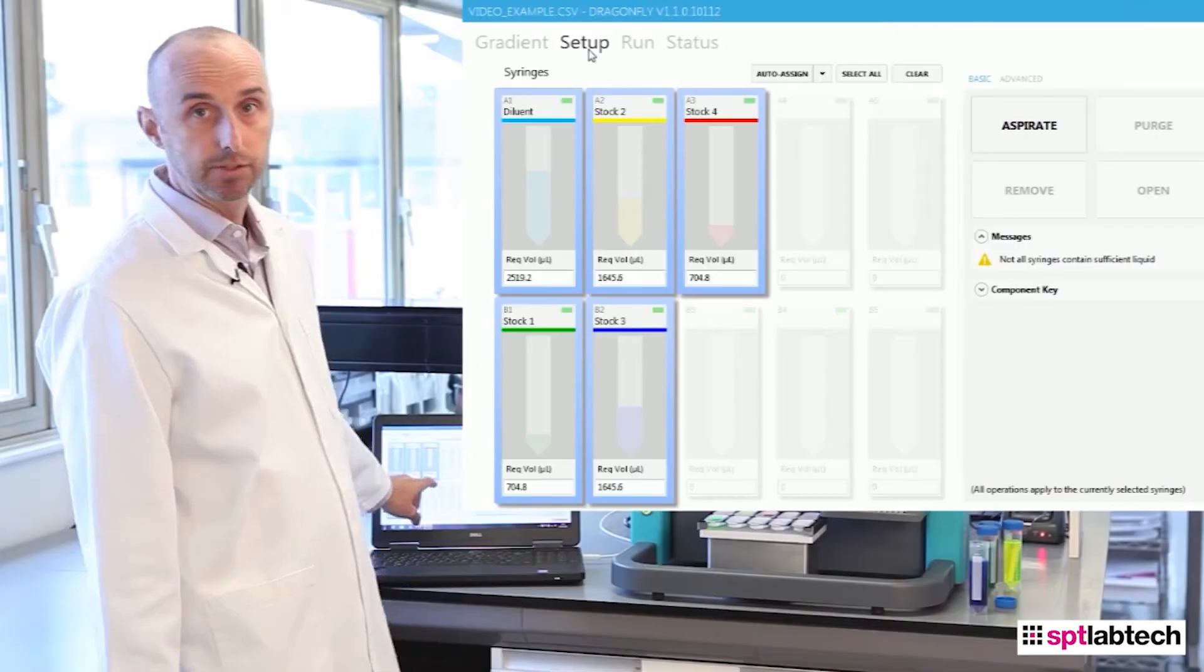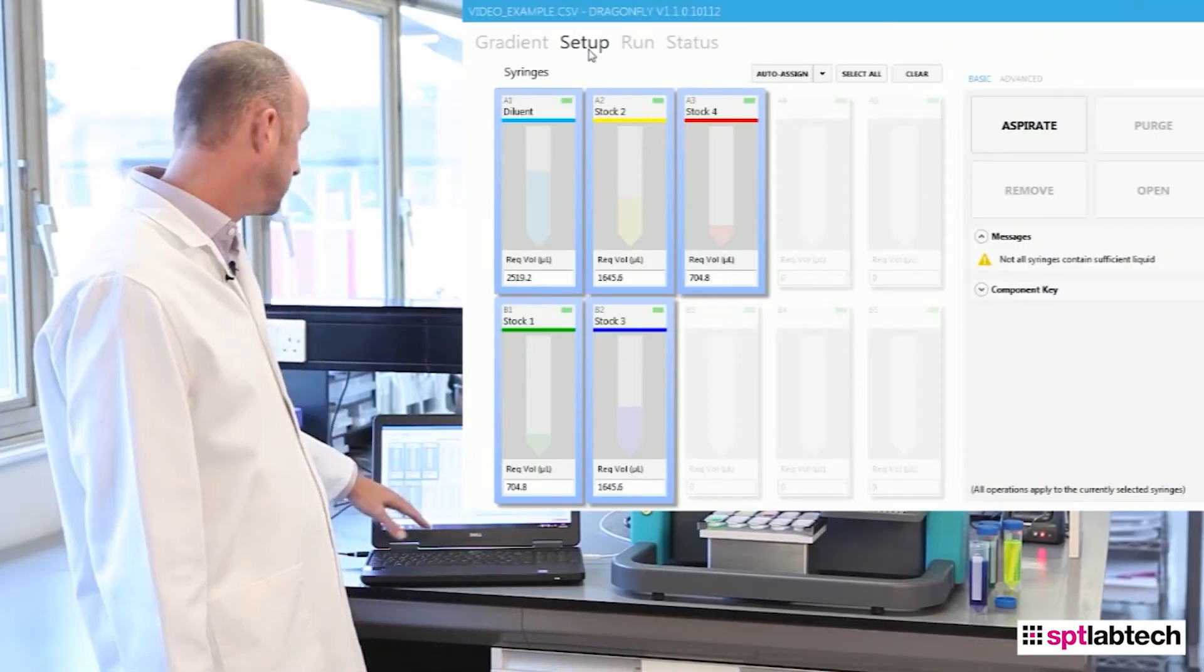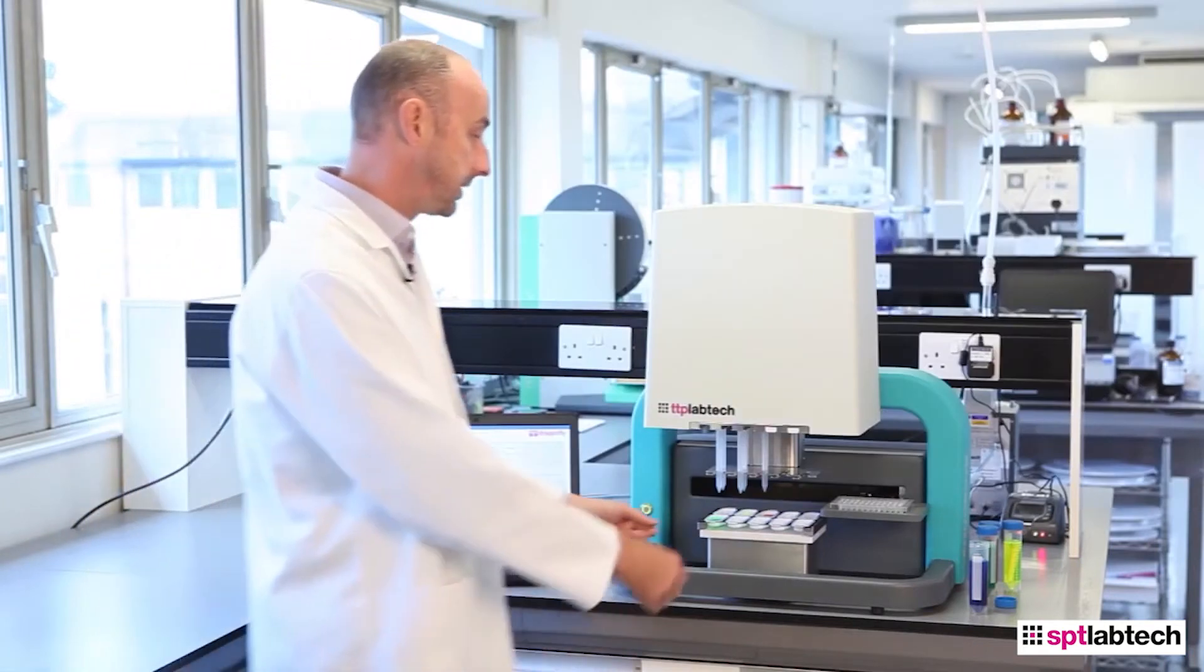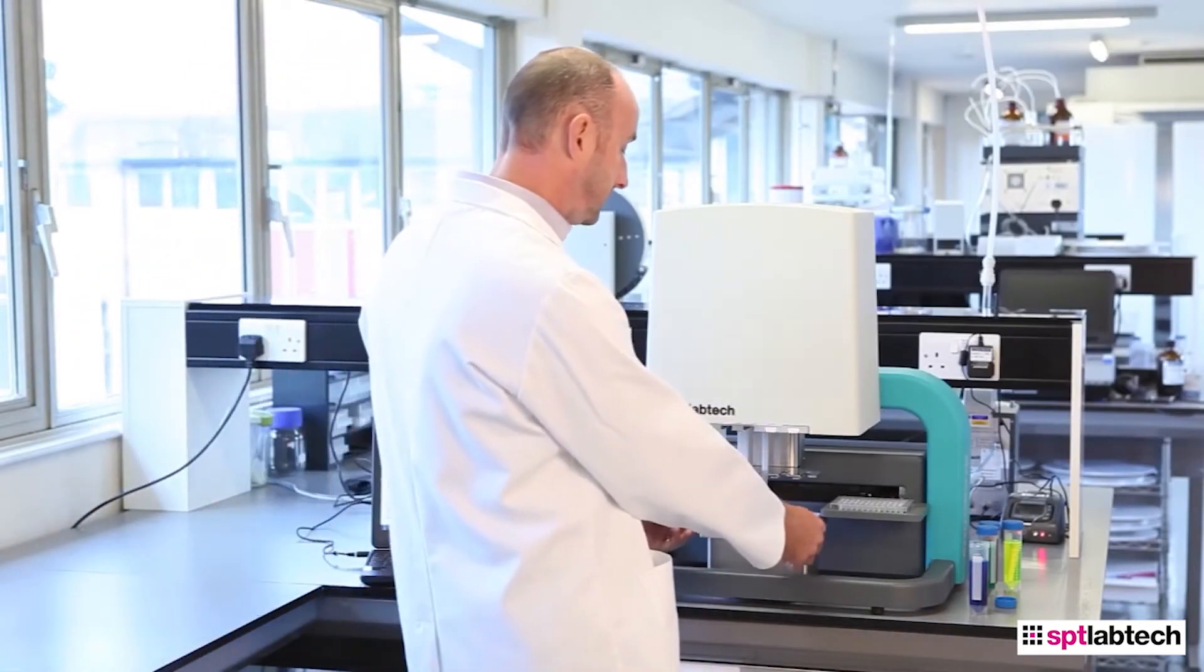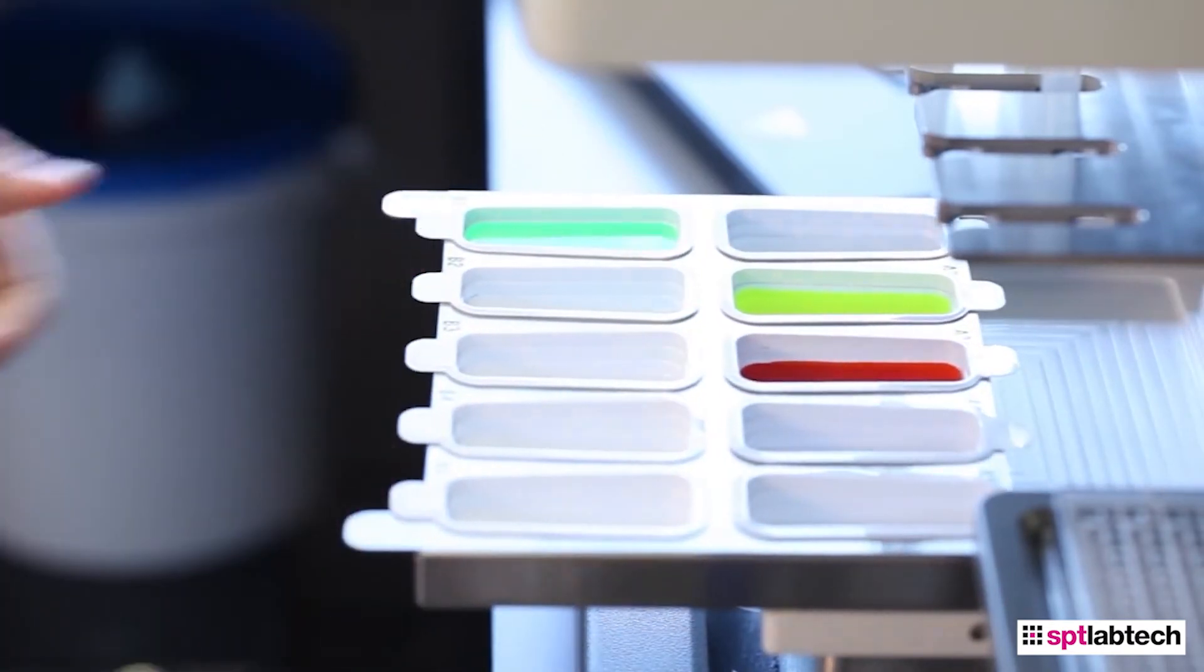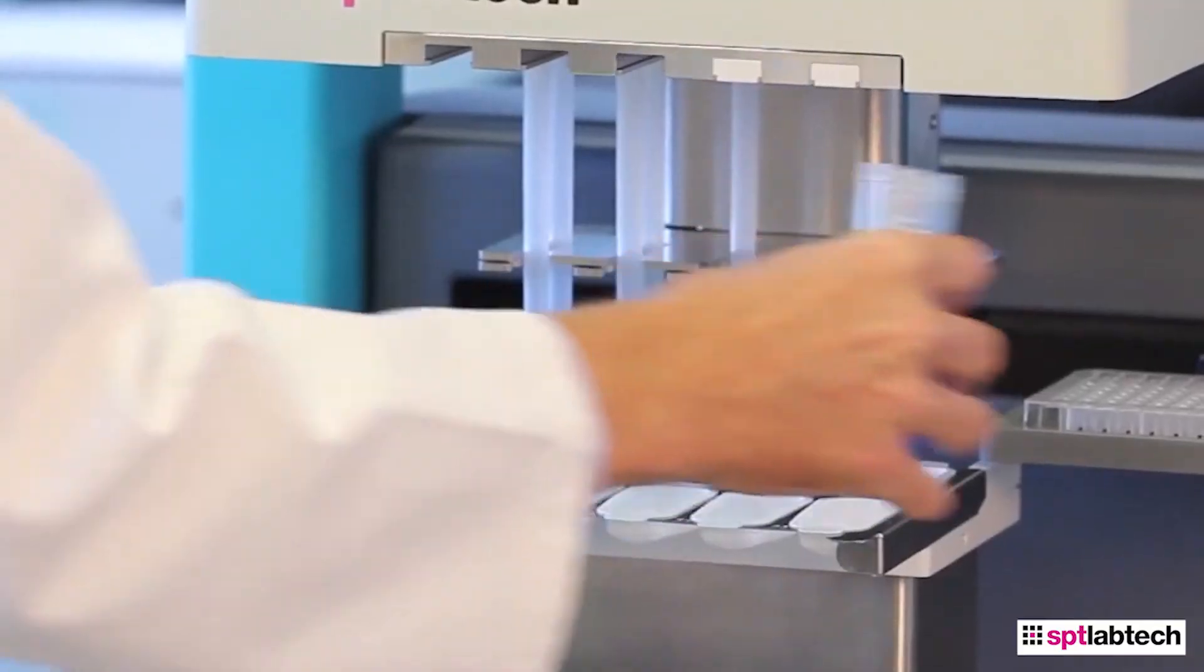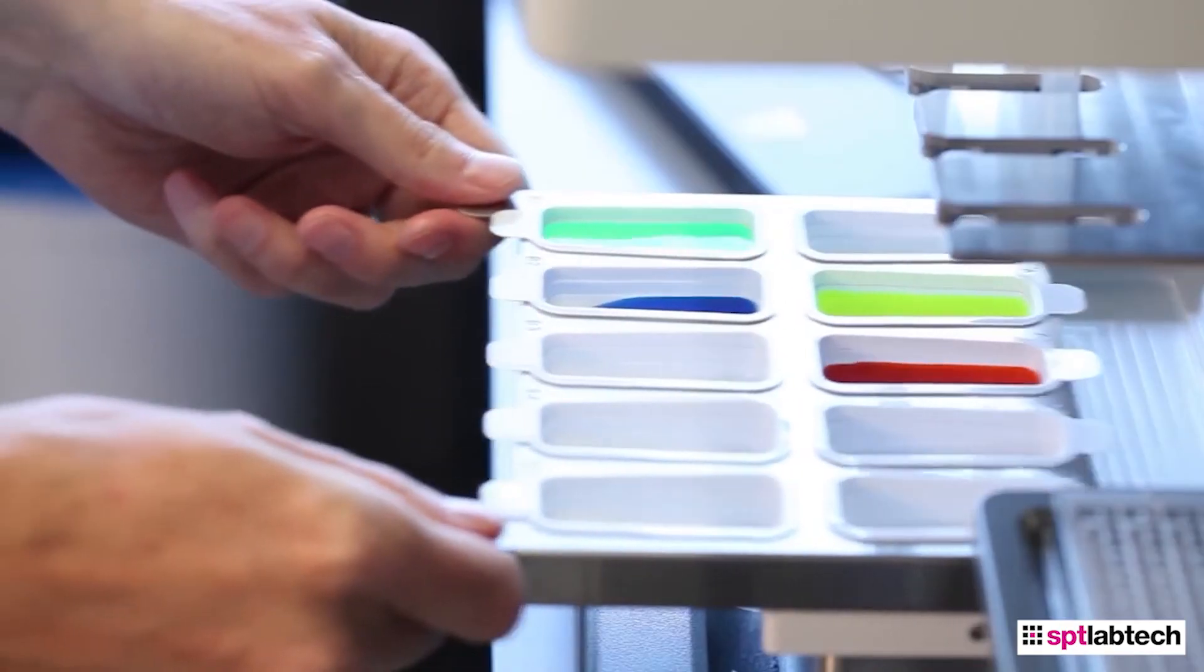The next thing I need to do is make sure I have enough of each of the stock solutions. I can add an exact volume here, or I can simply pour them in, which is quicker. In this case, to add the stocks, I simply slide out the reagent tray, take my stock solution, pour it in, re-engage the tray.